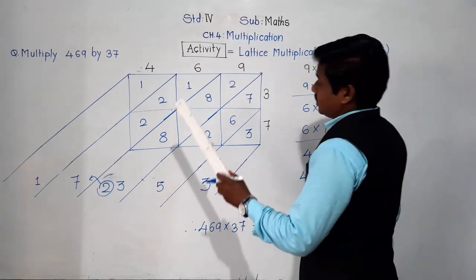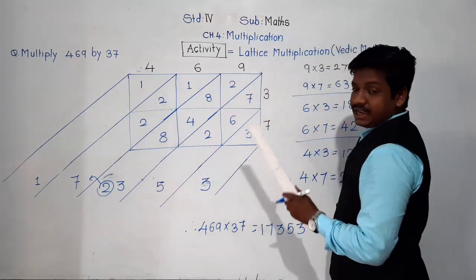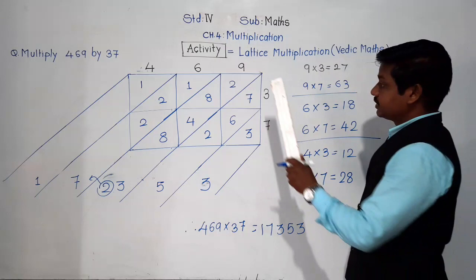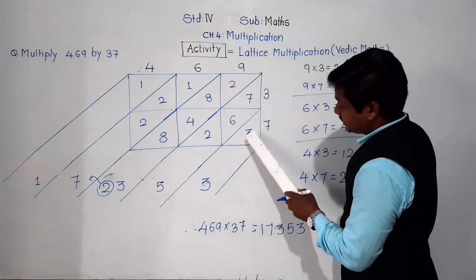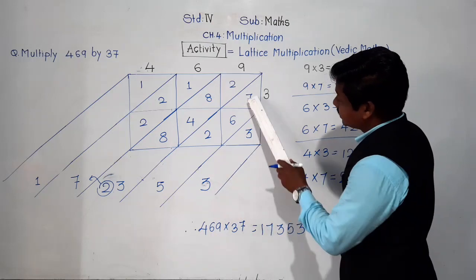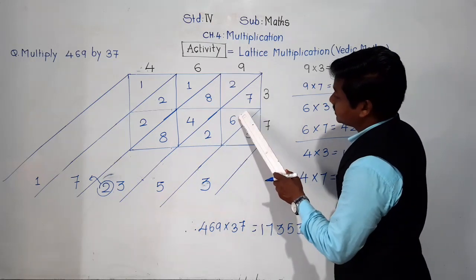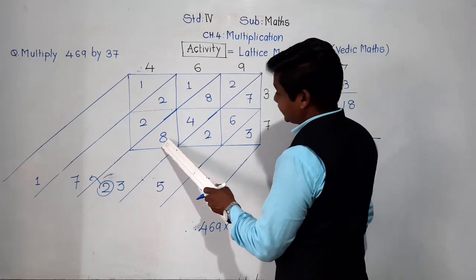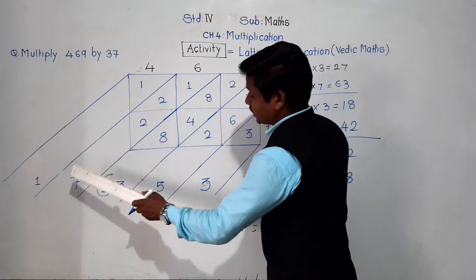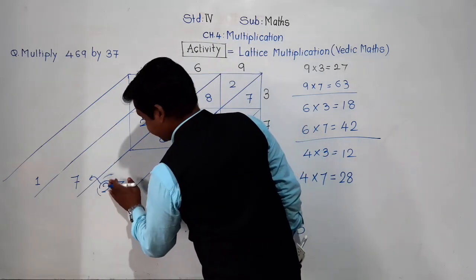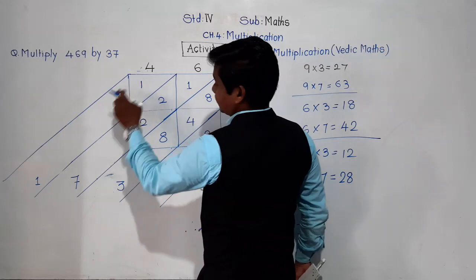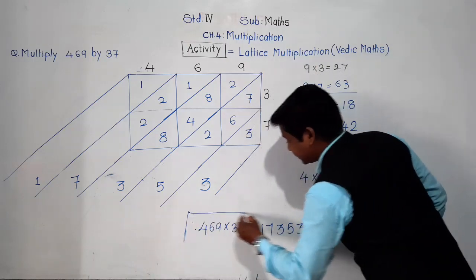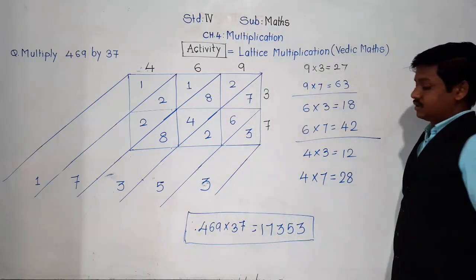See these strips — I am doing addition of the digits in each strip, and that is very important. The addition along each strip gives you the answer digit by digit. So 17,353 is your answer. Understood? This is the answer to our question.